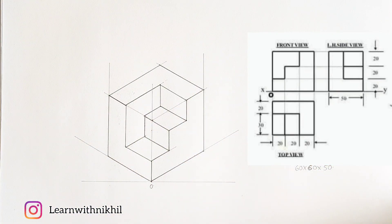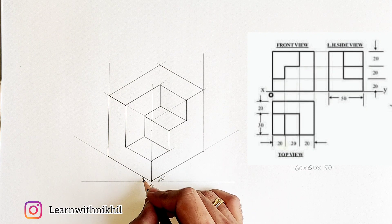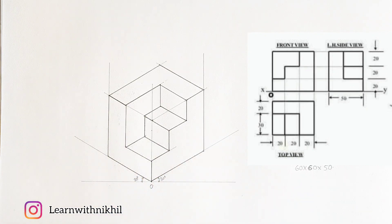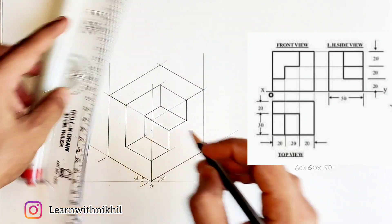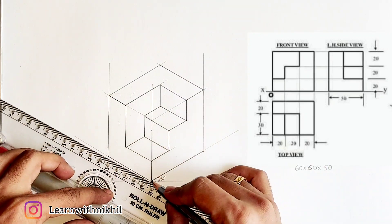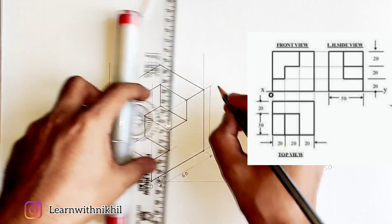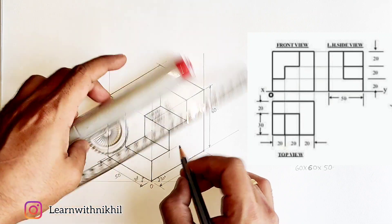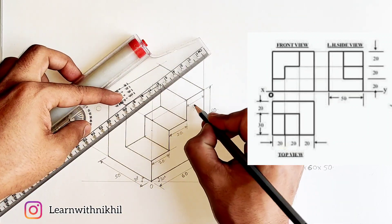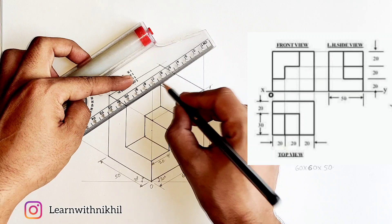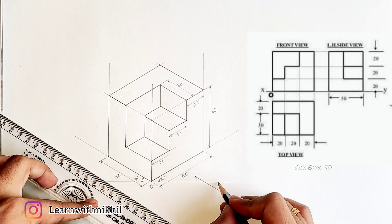So this is our entire isometric sum. We will now mark the dimensions, and don't forget to mark the arrow X which represents the front view. Mark the dimensions with extending lines — this distance is 50, this is 60. Mark all the dimensions given in the question on your figure. Finally, add the arrow X to represent the front view.